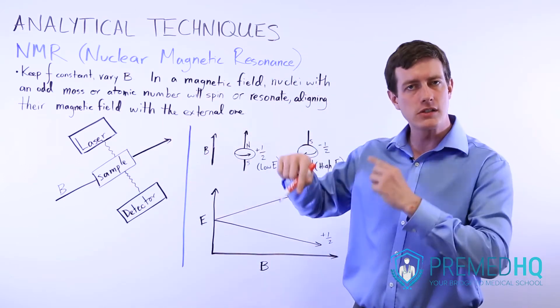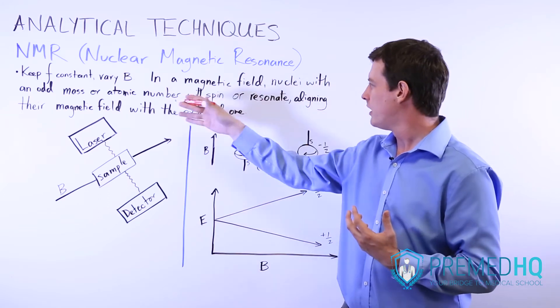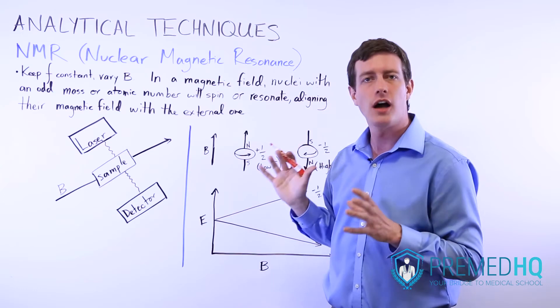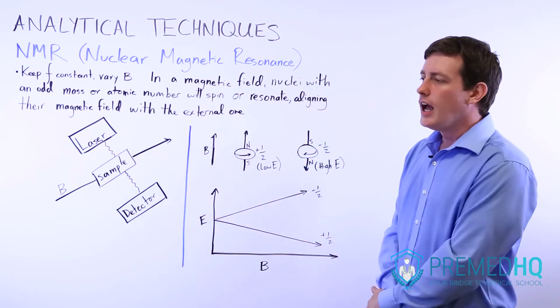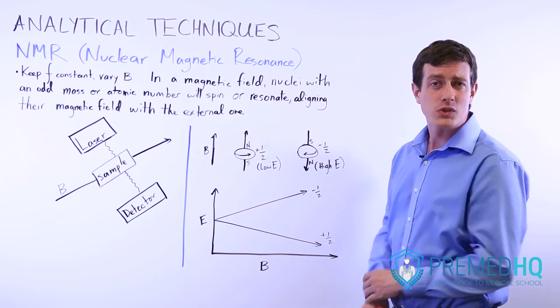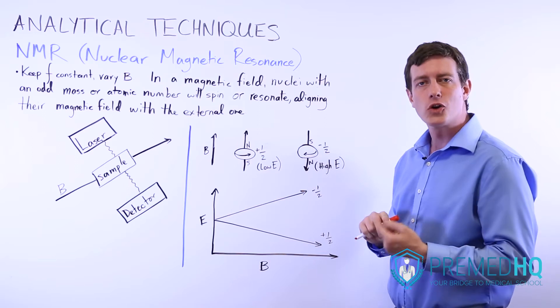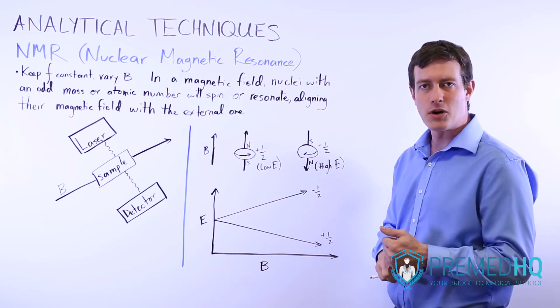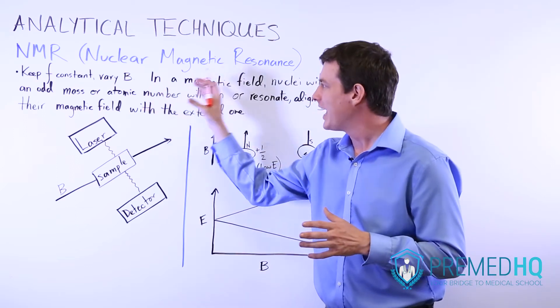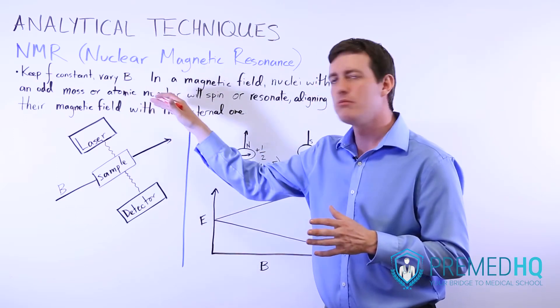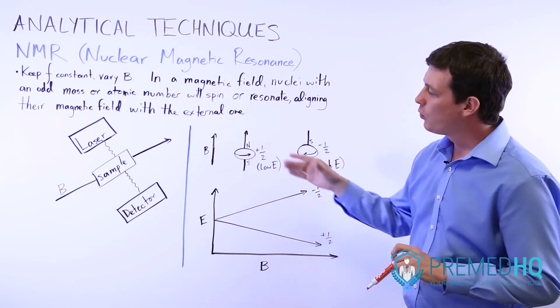And what the laser would be used for is flipping the spin of one of your odd numbered proton mass numbers or atomic numbers—one of your odd numbered nuclei. It's going to flip the spin of that, and the things that you're going to see most with NMR are going to be proton NMR or carbon-13 NMR, but you can use any odd numbered mass or atomic number.